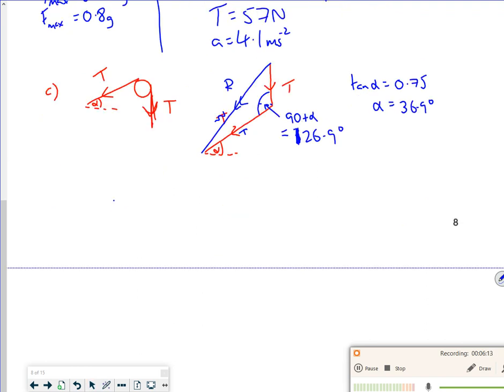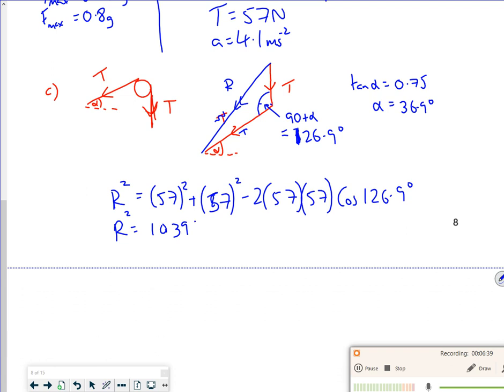I've got R squared equals - so it's my tension squared - 57 squared plus 57 squared minus 2 times 57 times 57 cos of 126.9.